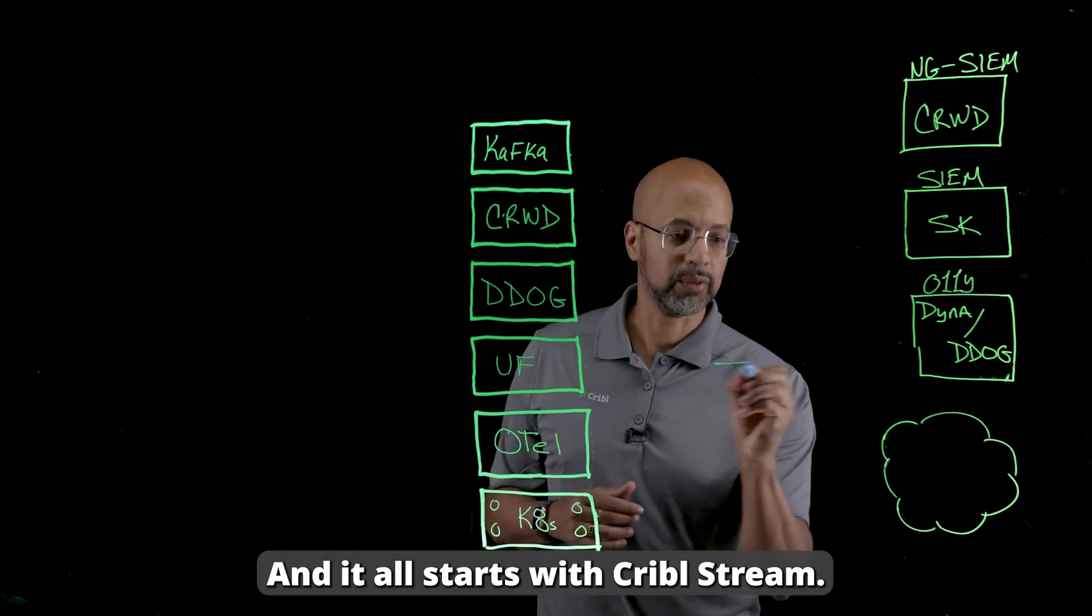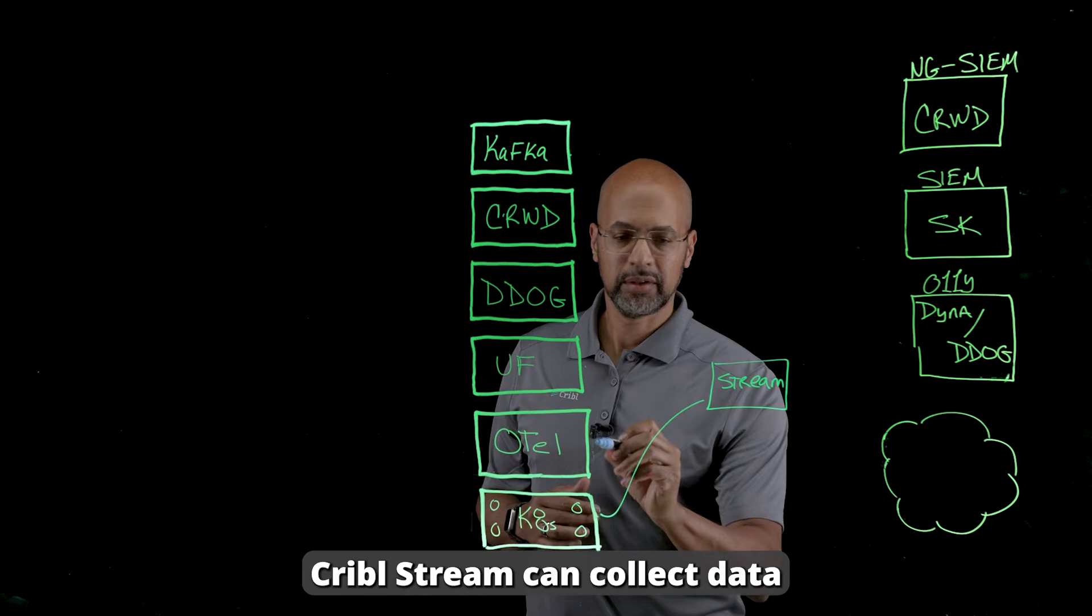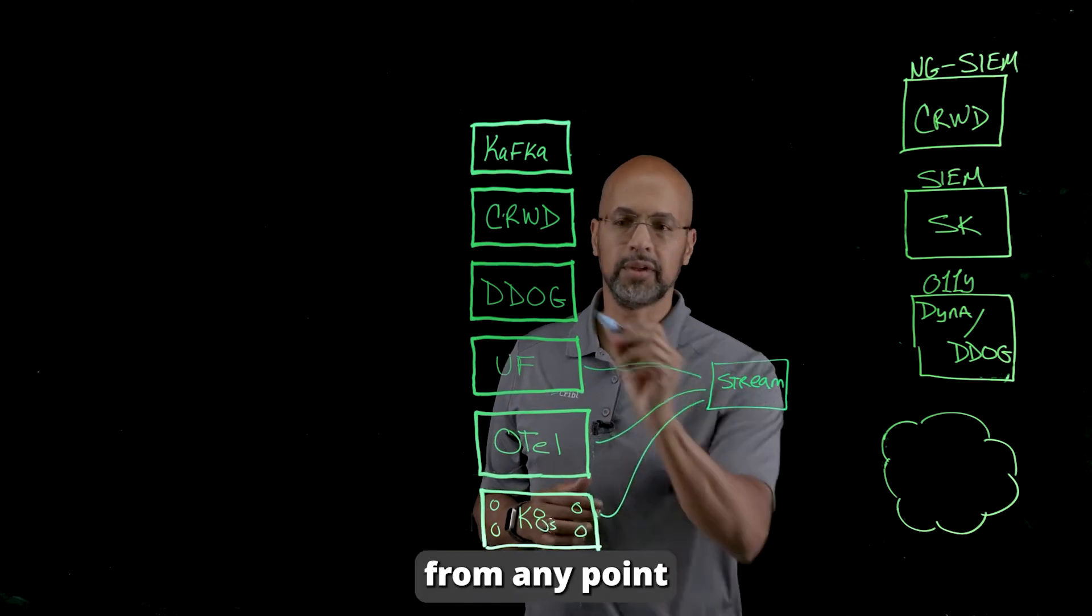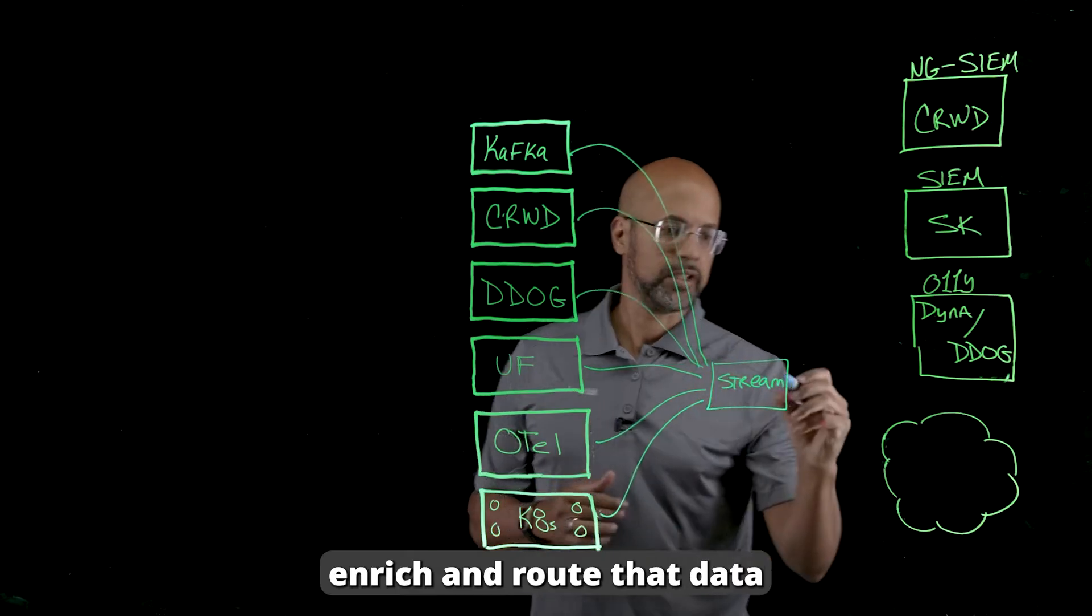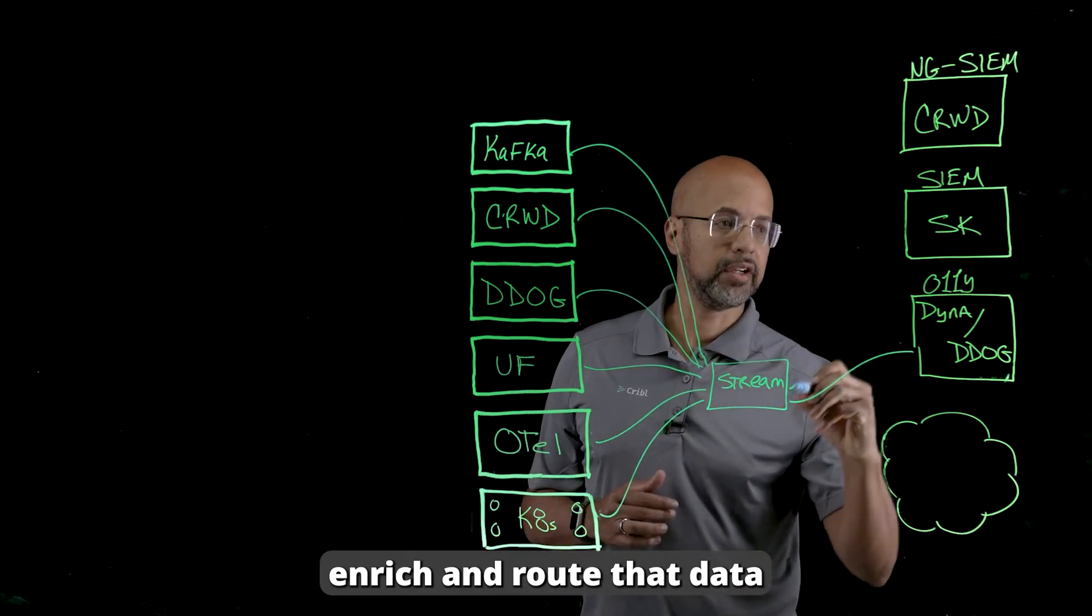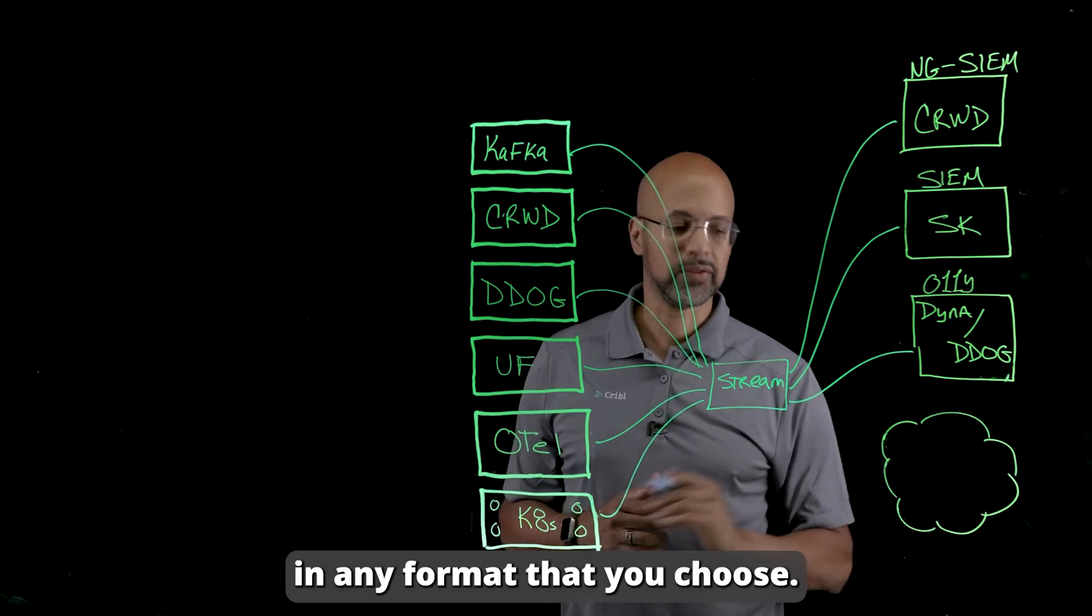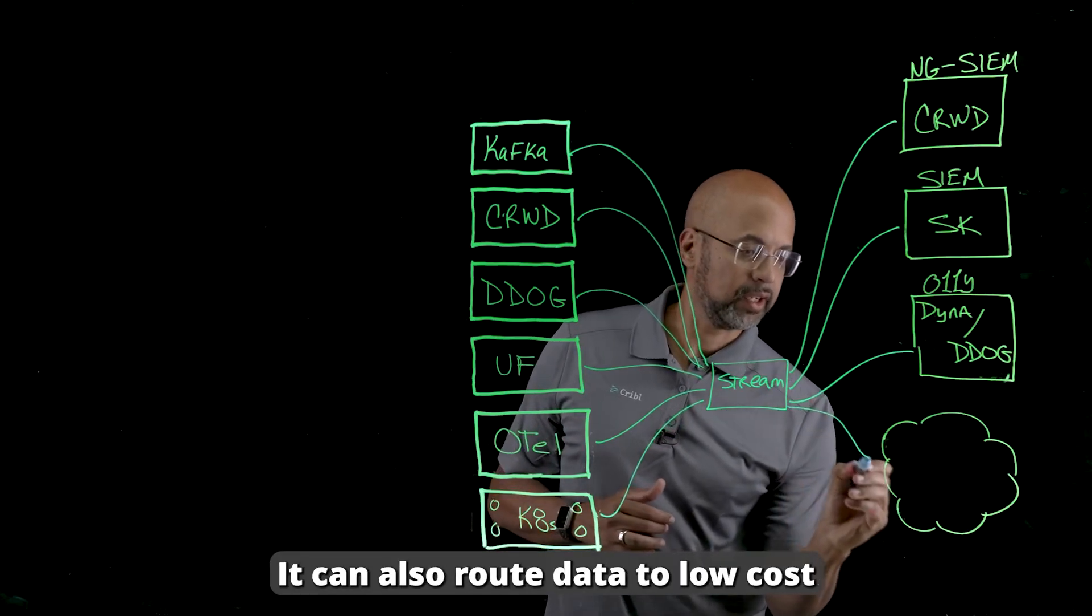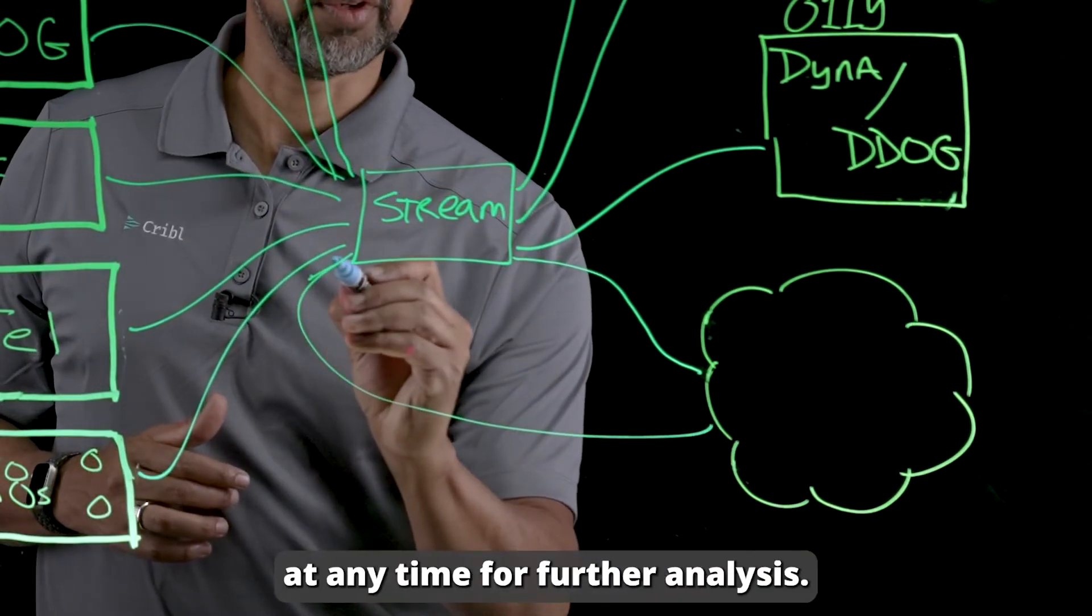And it all starts with Cribble Stream. Cribble Stream can collect data from any point and any source, enrich and route that data to any destination in any format that you choose. It can also route data to low-cost object store and replay that data anytime for further analysis.